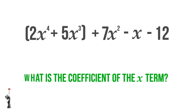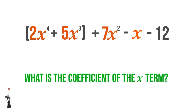What is the coefficient of the X term? Even though there are four terms containing X, there's only one with X to the power of 1. We look at that one and look for the coefficient — the number in front of it. But there's no number in front of it, which means the number must be 1.